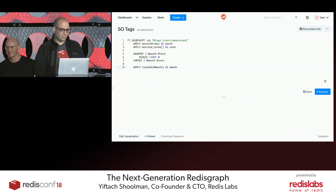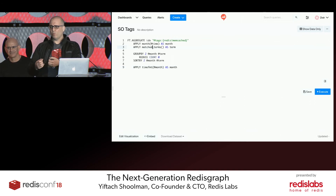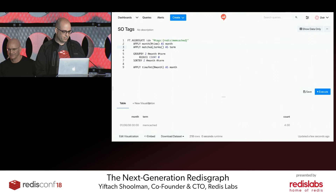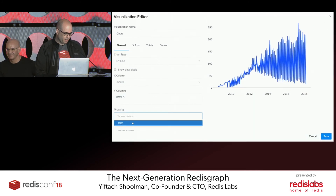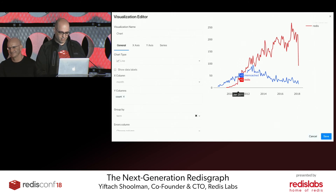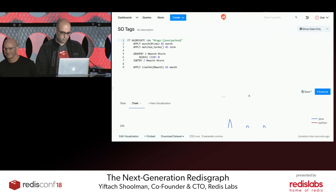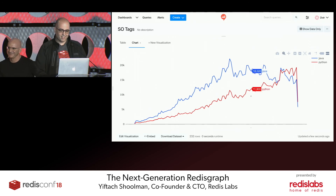Let me show another demo. We're a search engine — let's compare two tags. I'm searching for tags 'redis' or 'memcache', applying month as a time function. Another function called match_terms extracts for each record whether it's Redis, Memcache, or both. We group by month and term, count, sort by month and term, and apply time formatting. This is way faster because we're not scanning all of Stack Overflow. And in the visualization, grouped by term, you can see that around early-to-mid 2011, Redis surpassed Memcache in Stack Overflow questions.